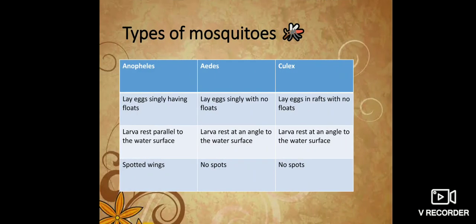There are 3 different types of mosquitoes mainly: Anopheles, Aedes and Culex. Let us look into the differences between them.